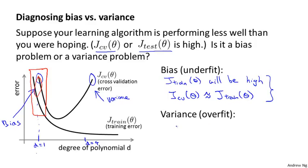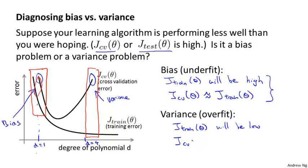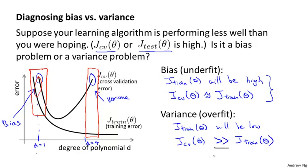In contrast, if your algorithm is suffering from high variance, the training error J train will be low — you're fitting the training set very well — whereas your cross-validation error will be much bigger than your training set error. There's a much-greater-than relationship between CV error and training error. So if you see this combination of values, that's a clue that your learning algorithm may be suffering from high variance and might be overfitting.